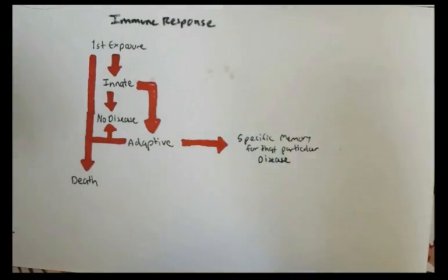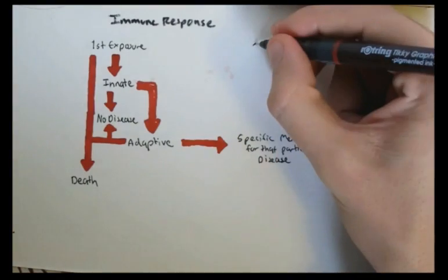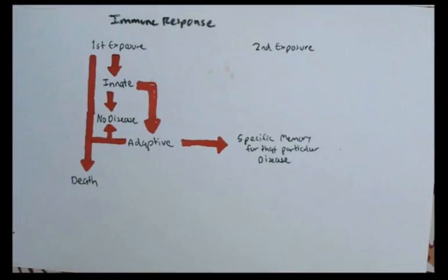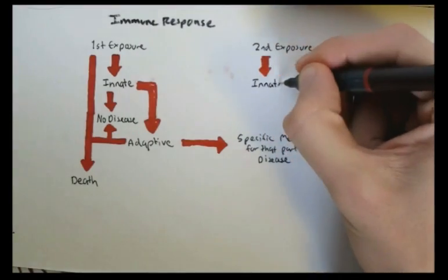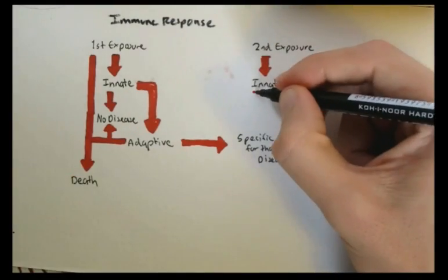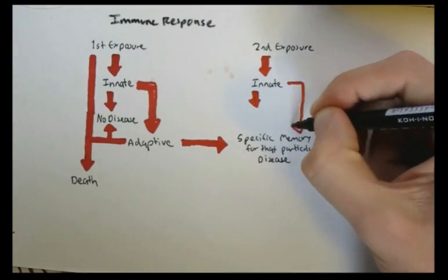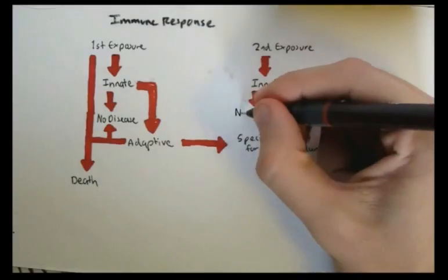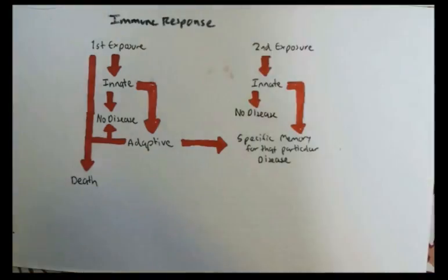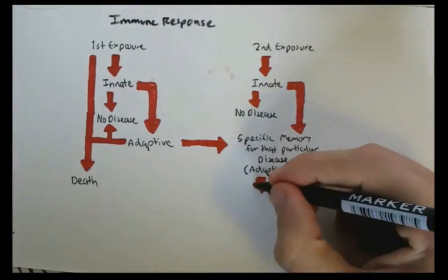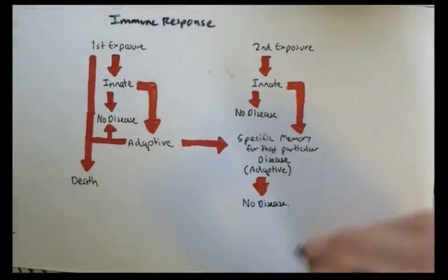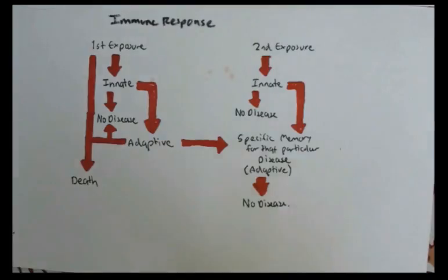So now we have the memory for that disease. When the second exposure comes, the innate immunity will kick in, and the disease might disappear already, or it will activate the adaptive immunity with the memory. With this memory, it will definitely get rid of the disease. So you'll be disease-free.